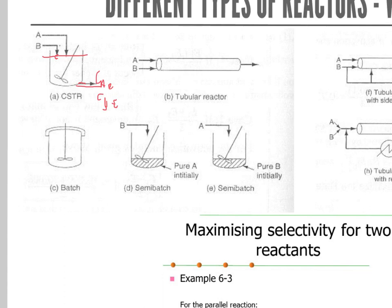The next is the tubular reactor, where along the length of the reactor the concentrations of A and B drop progressively until you get CAe and CBe at the exit. The third is the batch reactor: before starting, you put A and B inside, close the lid, supply temperature, let it react until a certain time, then stop and take out the products.